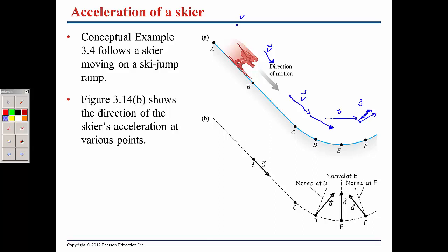If we consider his acceleration at these points, his acceleration is going to be downhill at A, downhill at B, the same at C. Then if this right here is the normal to the curve, at point D he is still accelerating, so the acceleration is upward but with a little tiny component still in the downhill direction.